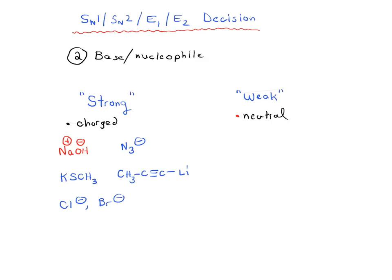Under the weak category, we're looking at neutral species. So we're going to look at CH3OH, H2O, things like CH3CH2OH, acids such as CH3CO2H. These are all neutral species, and under these types of conditions, you would probably expect that these neutral species are going to not do the SN2.